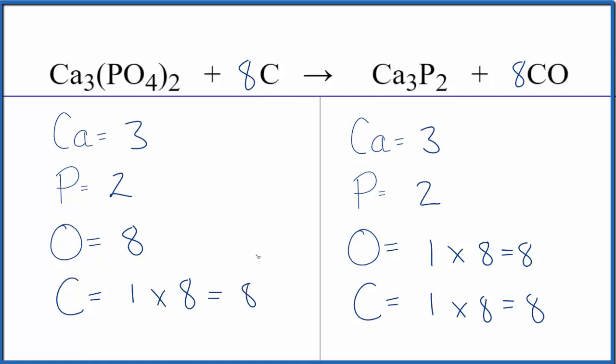This is Dr. B with the balanced equation for calcium phosphate plus carbon gives us calcium phosphide plus carbon monoxide gas. Ca₃(PO₄)₂ plus C. Thanks for watching.